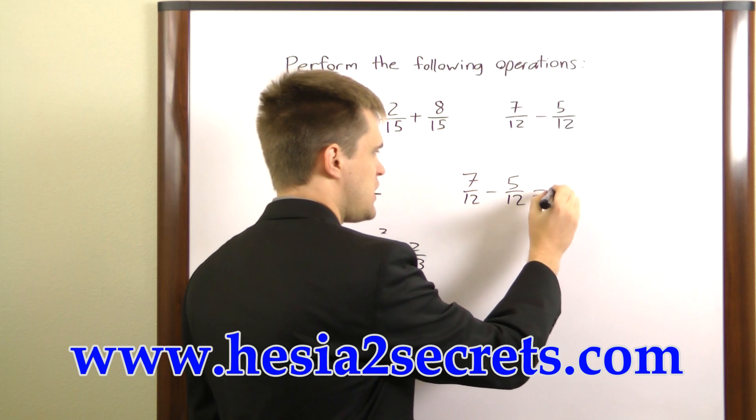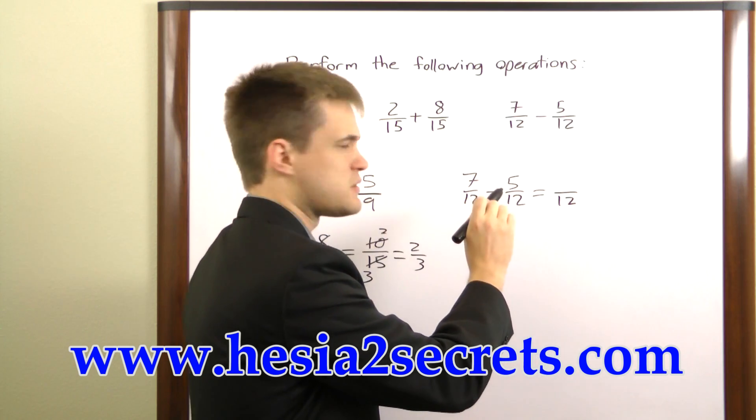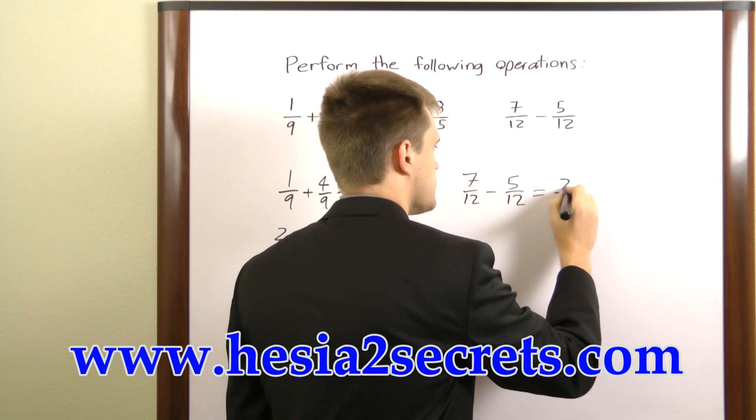The 12s in the denominator will carry through to the solution and then we just perform this operation on the two numerators. 7 minus 5 equals 2.